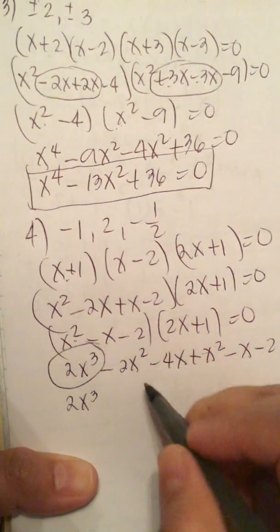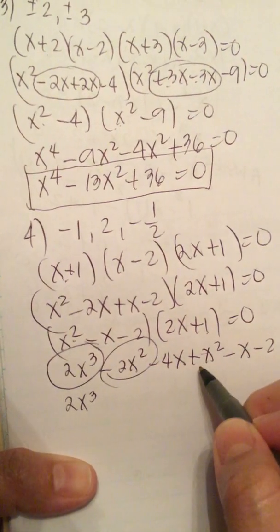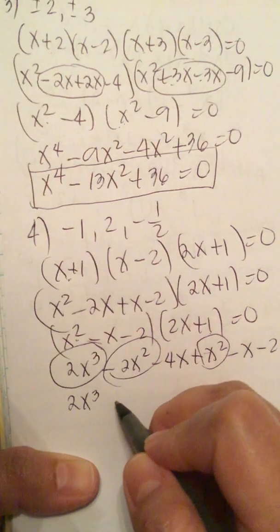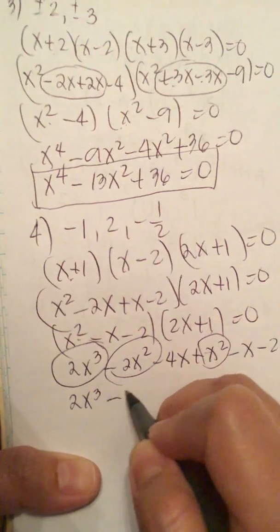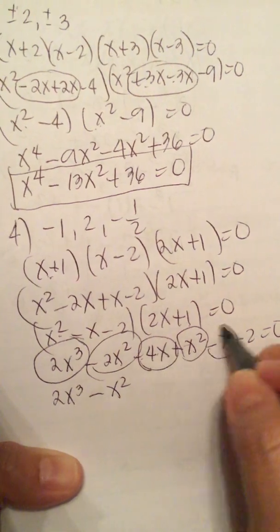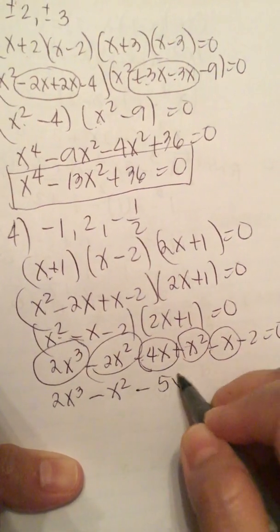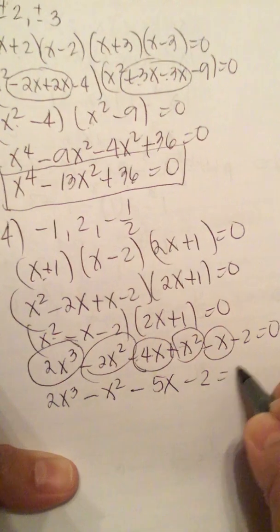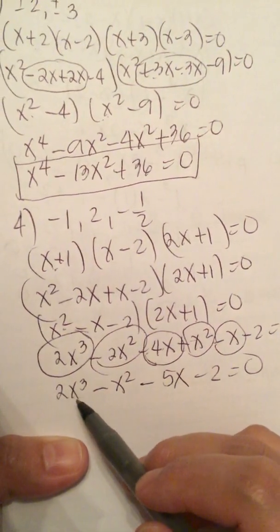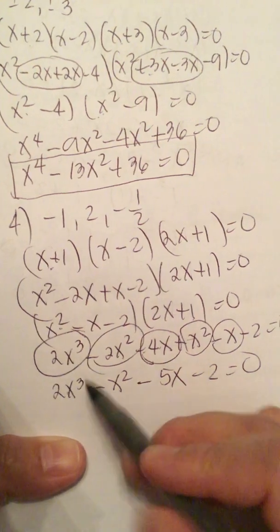Then minus 2x squared and plus x squared for a net of minus x squared. Then minus 4x and plus x for a net of minus 5x, minus 2 equals 0. So this is the answer.